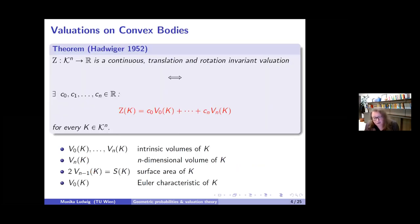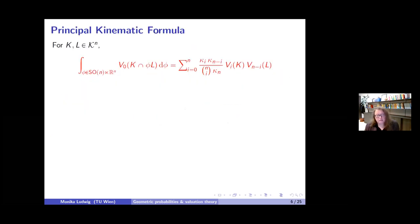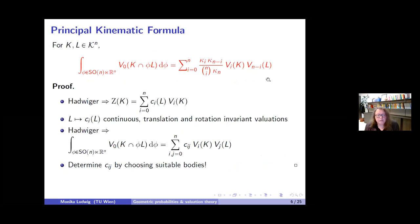Going back to the original question, by Hadwiger's theorem, fixing L makes Z(K) a linear combination of intrinsic volumes of K with coefficients. Similarly, the functional mapping L to those coefficients is again a continuous, translation and rotation invariant valuation, so Hadwiger tells us it is a linear combination of intrinsic volumes of L.